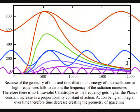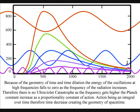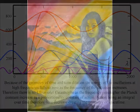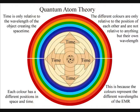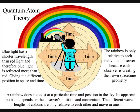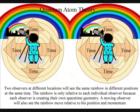Time is only relative to the wavelength of the object creating the space-time. This can be seen because light of different colours have different wavelengths — blue light has shorter wavelengths than red light, and therefore blue light is refracted more than red. The different colours will have different positions in space and time, therefore forming rainbows of colour. A rainbow is only relative to each individual observer, because each observer is creating their own space-time geometry. If we have two observers at different positions, they will both see the same rainbow in different positions of the sky at the same time.